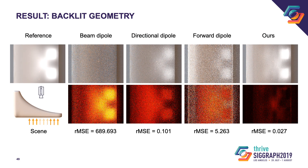Here are some more results on backlit geometry. In this scene, the geometry becomes thinner towards the right; the camera is facing down and the light is arranged in a checkerboard pattern behind the object. We can see that our method more faithfully reproduces the appearance of the reference image than previous subsurface scattering approximations.